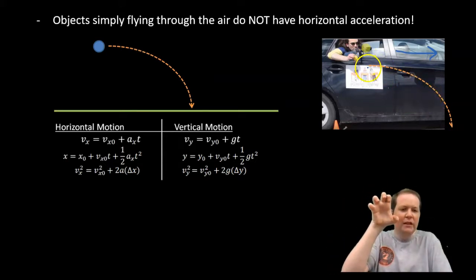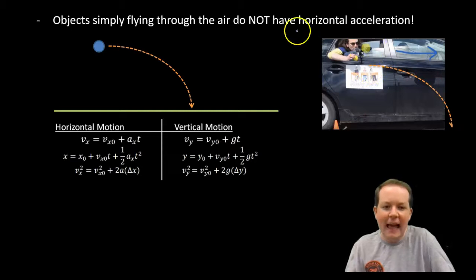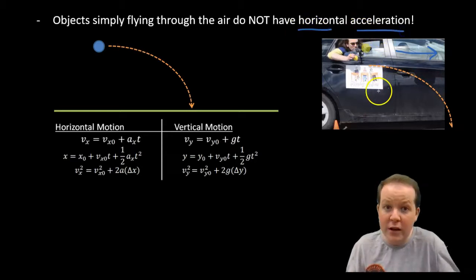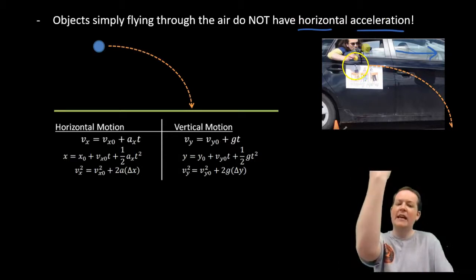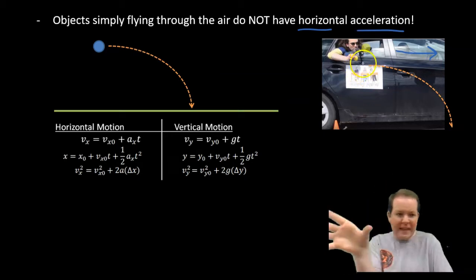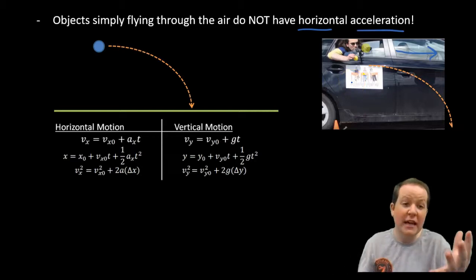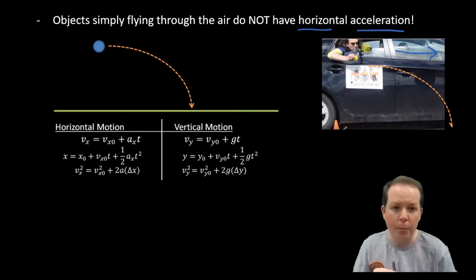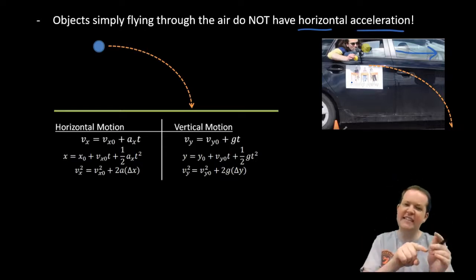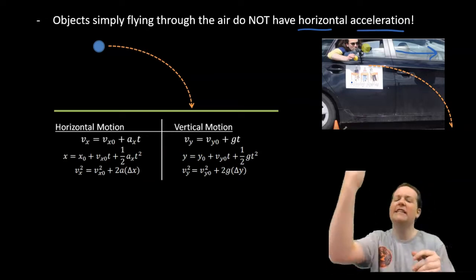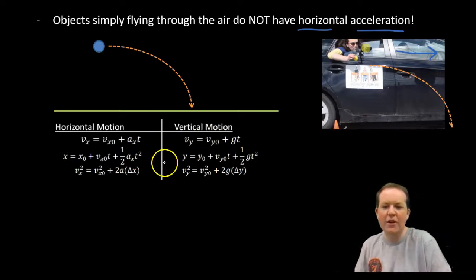If you just release it, you're not throwing it forward. You're not throwing it to the right or to the left. It doesn't have any horizontal acceleration. If it's just being released, gravity is accelerating it vertically, downward. But in the left-right, it is not accelerating. Even if you took a tennis ball and you throw it across your room, the moment it leaves your hand, the moment it's in the air, it's not accelerating left or right. It's accelerating only downward, which means actually these two sets of equations become easier.